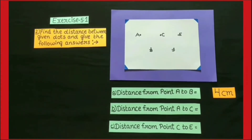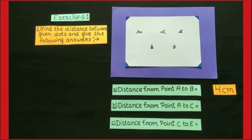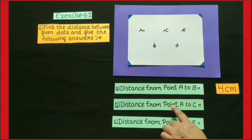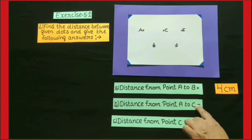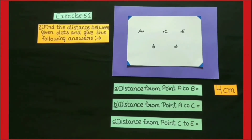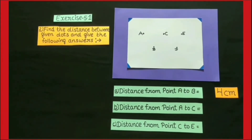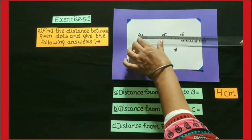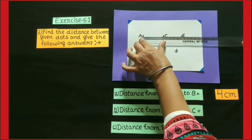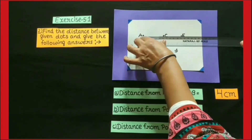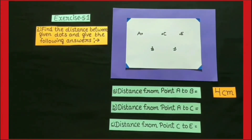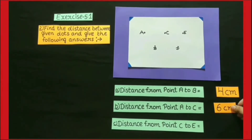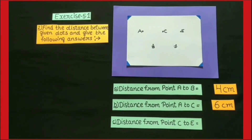Second question: distance from point A to C. In this question, we have to find out the distance between point A to C, and we find this distance by measuring it with a scale. Its distance is 6 cm. So, the answer to the second question is 6 cm.